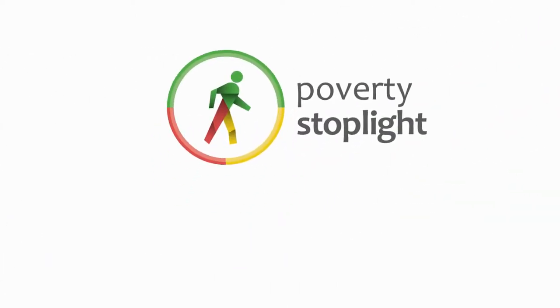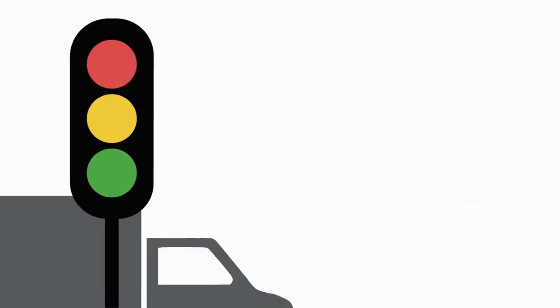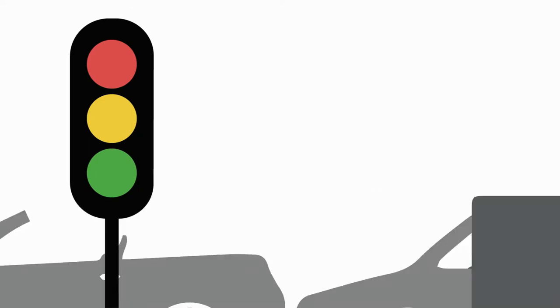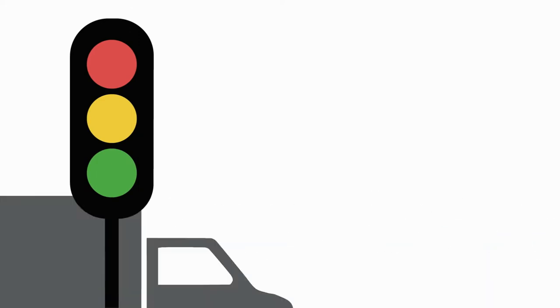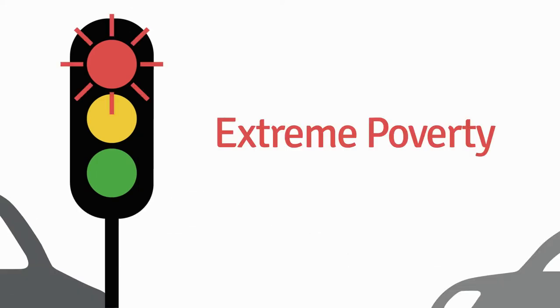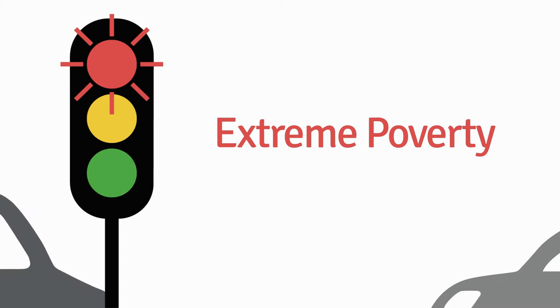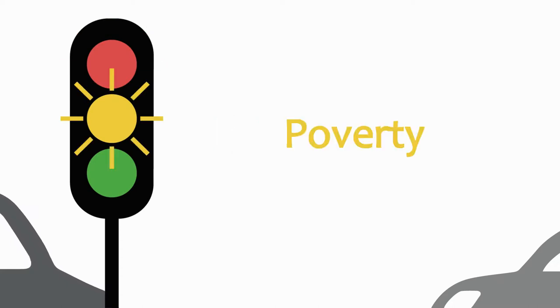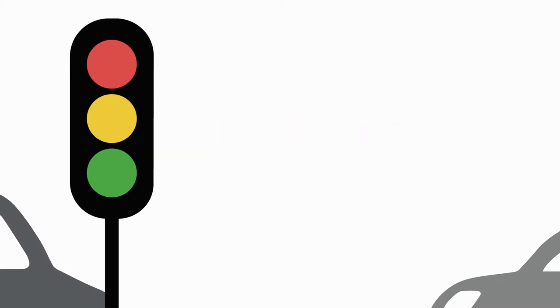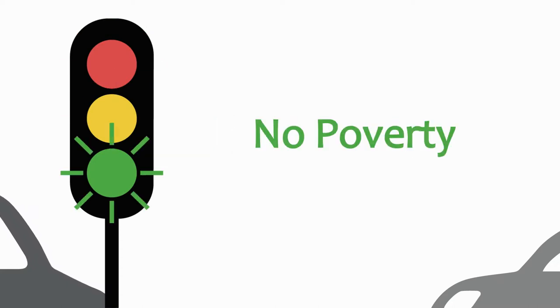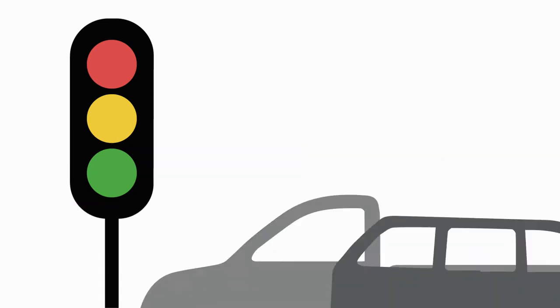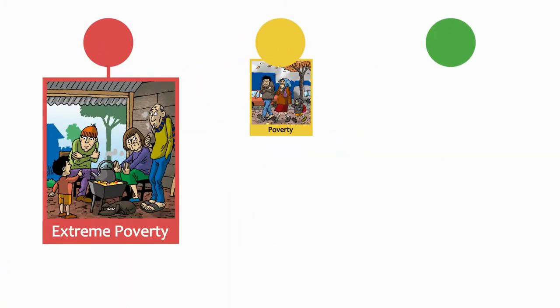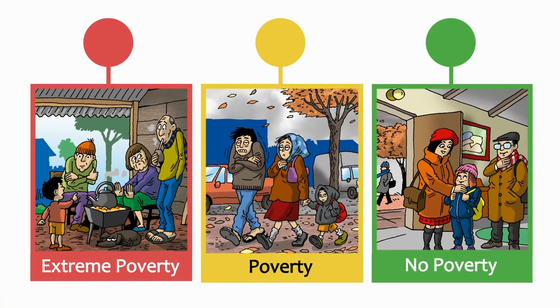We call it stoplight because we use the same visual logic of the conventional traffic lights that we find in our cities, where red indicates extreme poverty, yellow poverty, and green no poverty. With this, we can begin discussing how to overcome poverty and improve the quality of life of each family.